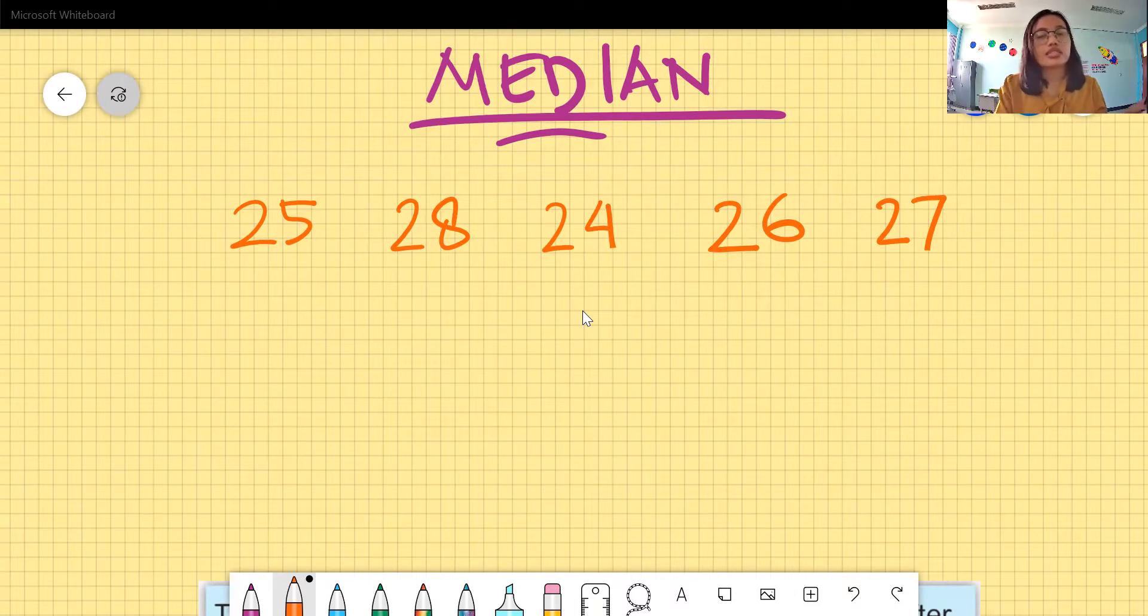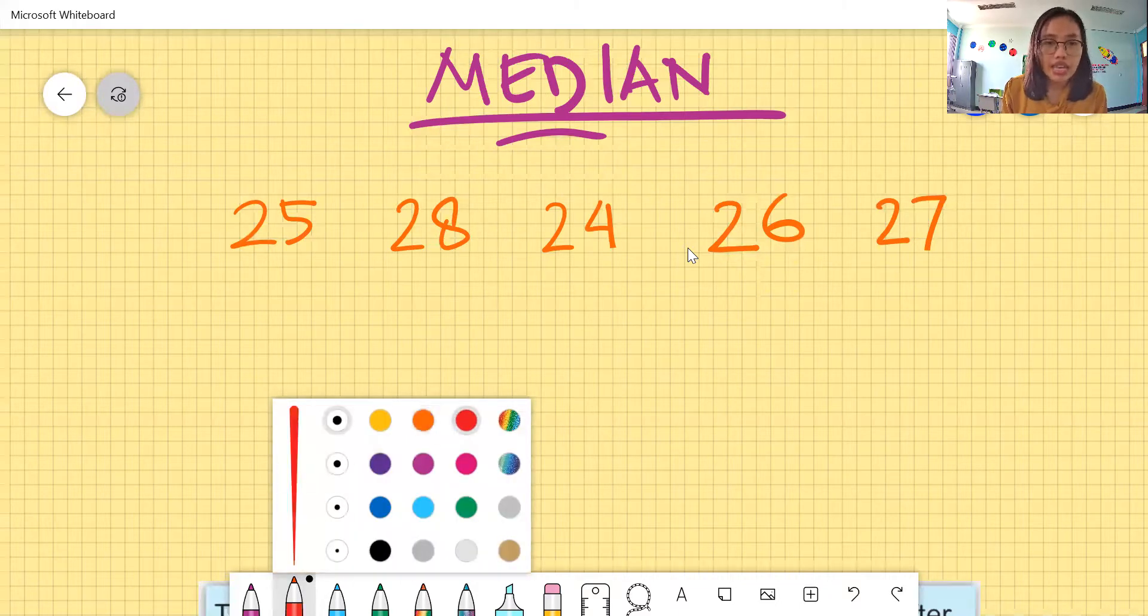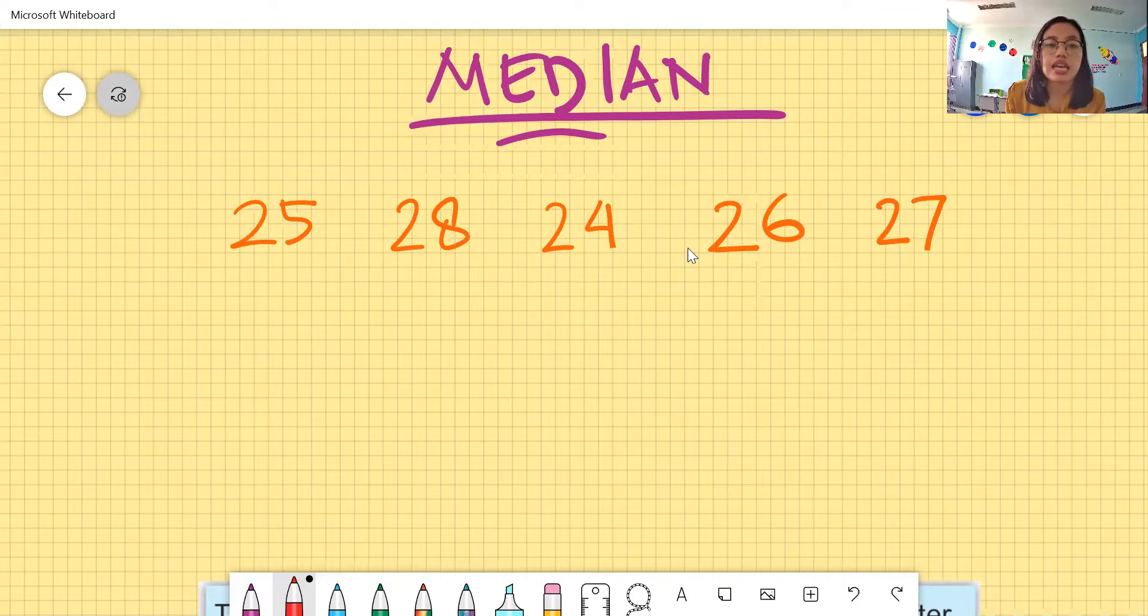So, the first step, we have to make sure we arrange these numbers in order. Jadi kita urutkan, kita buat bilangan ini menjadi terurut. We can arrange from the least to the greatest. Kita bisa urutkan dari terkecil ke yang terbesar ataupun sebaliknya. So let's start from the least to the greatest. Kita urutkan dari yang terkecil ke yang terbesar.